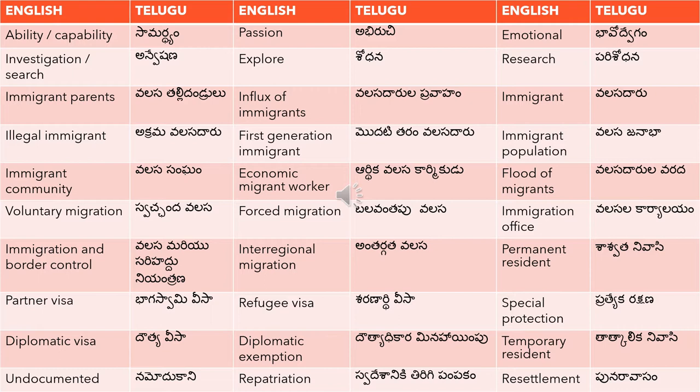First generation immigrant means 'modati taram valasa daru'. Immigrant population means 'valasa janabha'. Immigrant community means 'valasa sangham'. As we saw in previous videos, community means 'sangham'. You can combine different words you know to make up your own translation for compound terms.